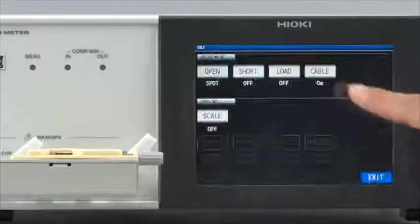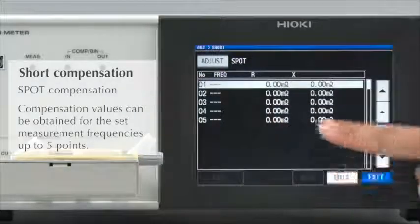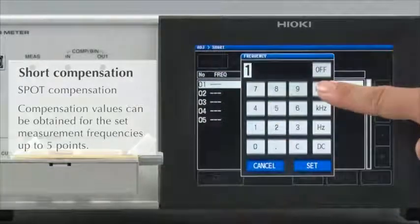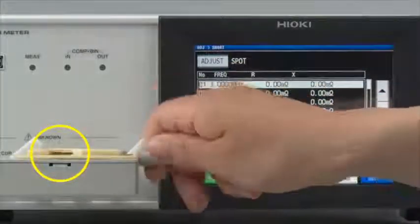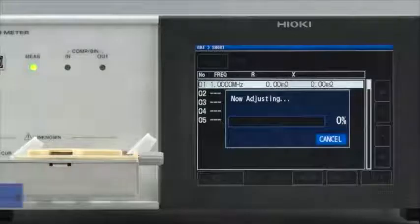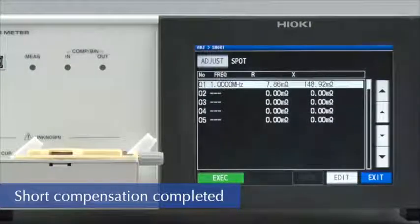Next, conduct short compensation in the same way. Set at 1 MHz. Short the fixture and then conduct compensation. Short compensation is now completed. Let's start testing.